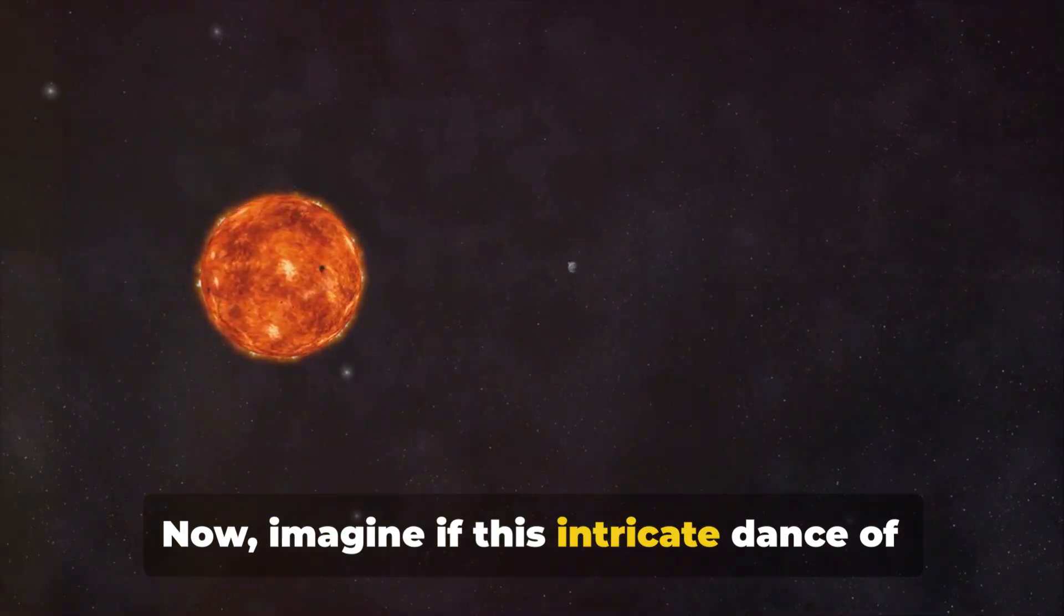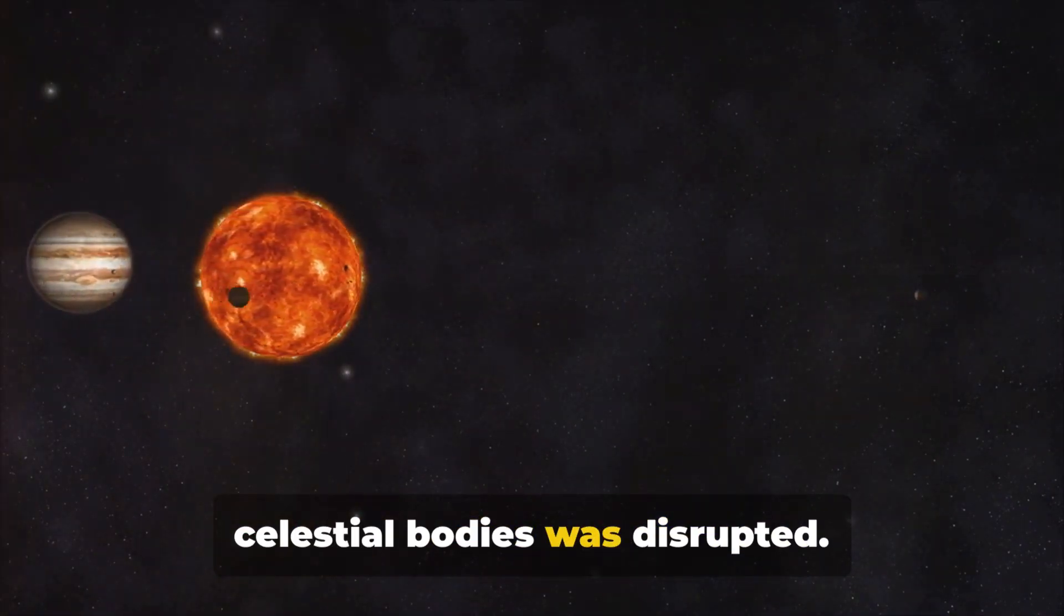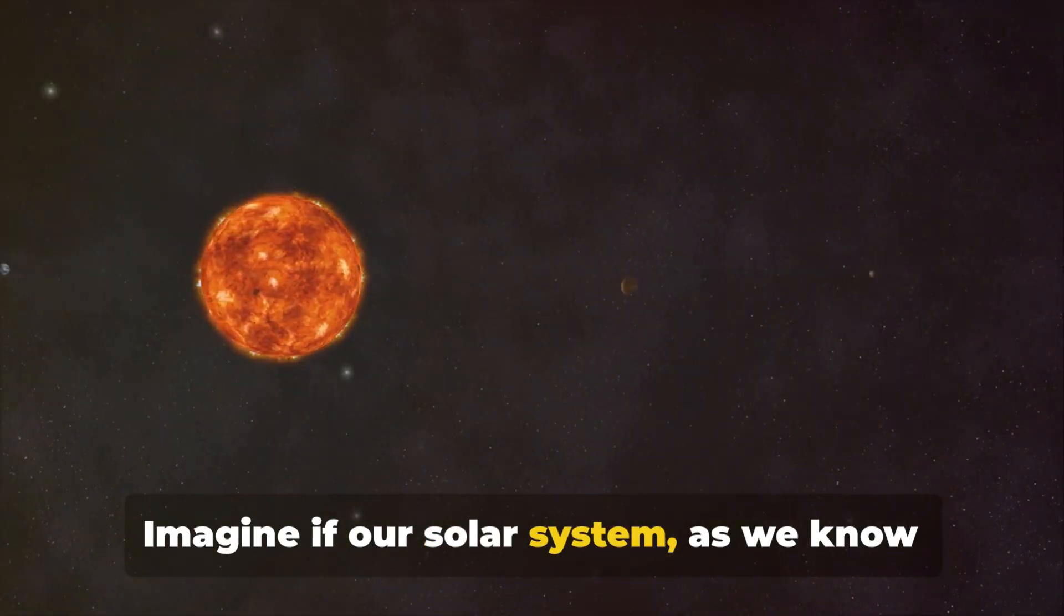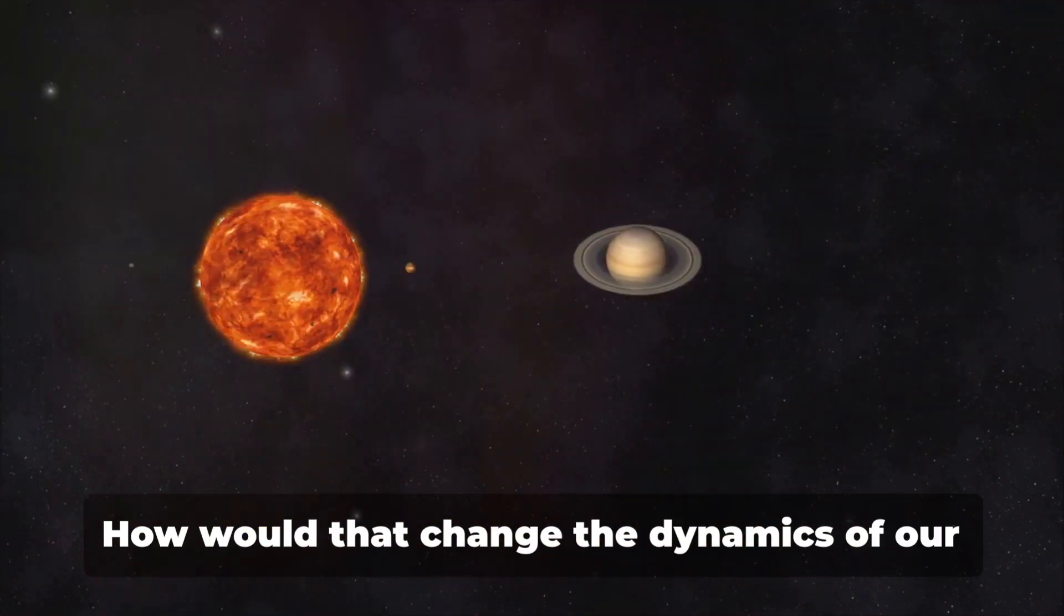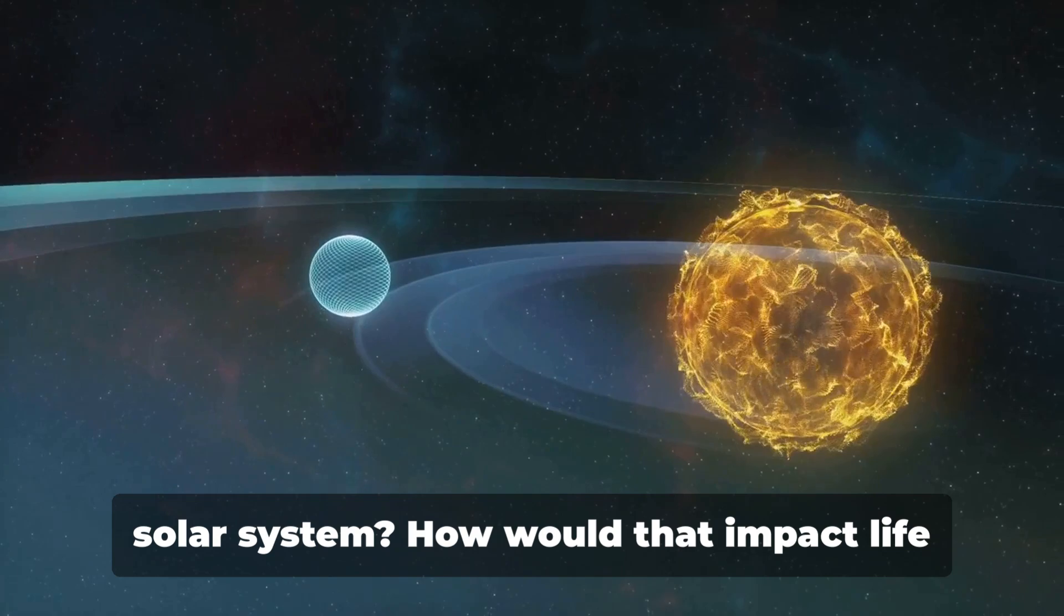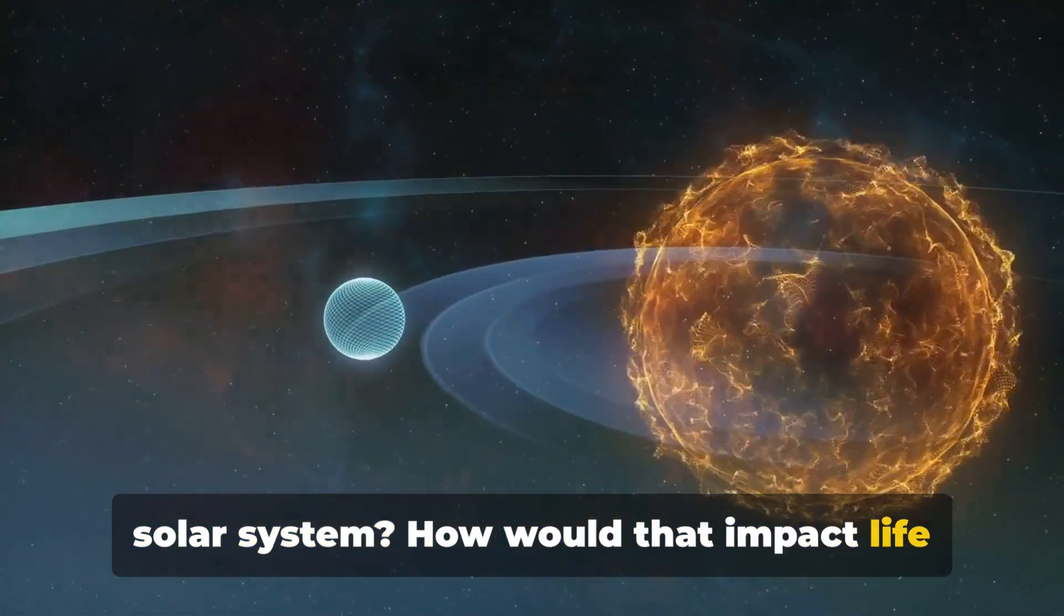Now imagine if this intricate dance of celestial bodies was disrupted. Imagine if our solar system, as we know it, was transformed. Imagine if instead of one, we had two suns. How would that change the dynamics of our solar system? How would that impact life on Earth?